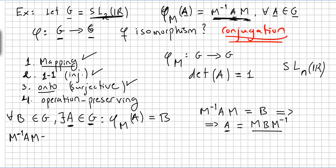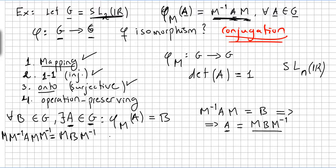To make this explicit: starting from M-inverse A M equals B, we left-multiply both sides by M and right-multiply by M-inverse. The left side gives identity times A times identity, which is A, and the right side gives M B M-inverse. So A equals M B M-inverse, and step three — surjectivity — is checked.